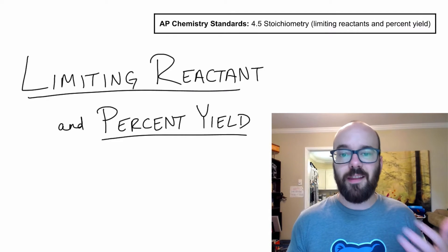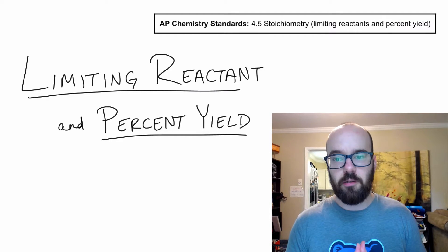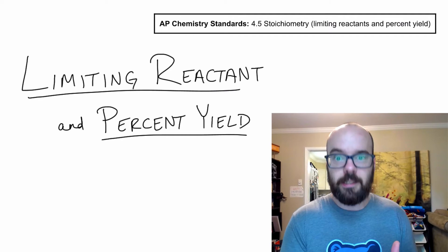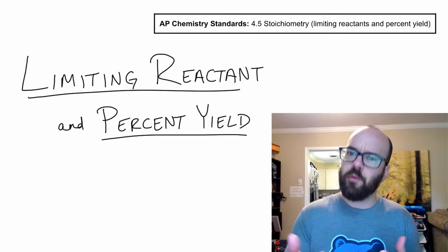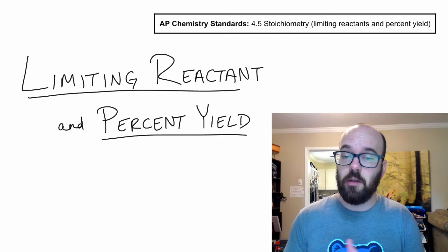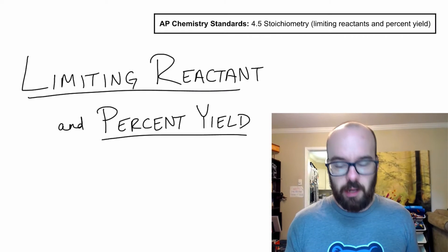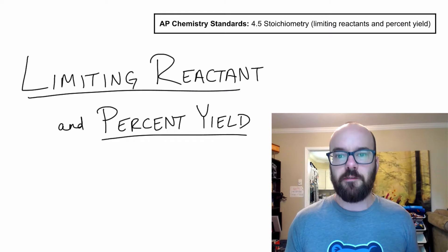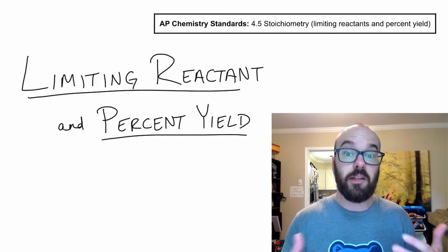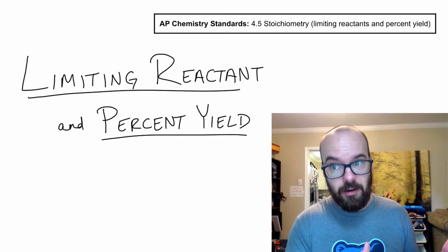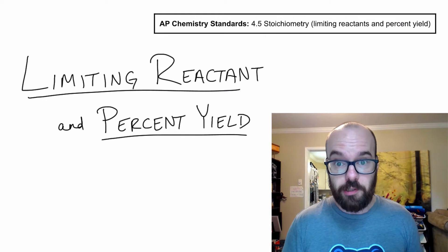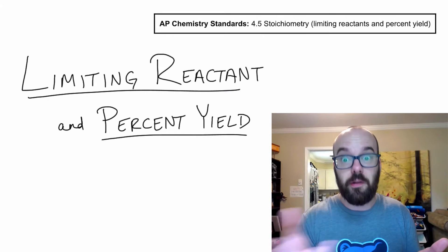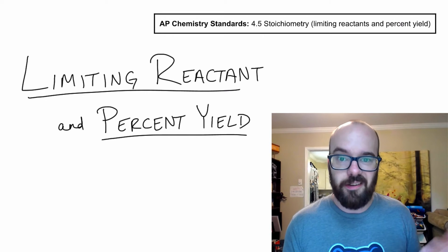Hey everyone, in this video we're going to look at limiting reactant and percent yield. This is a subset of stoichiometry and it's the idea that when you mix two things together, one of them will determine how much product you'll get. The metaphor we chemistry teachers love to give for this is making sandwiches.